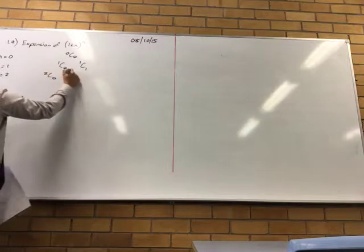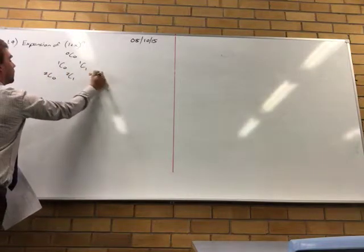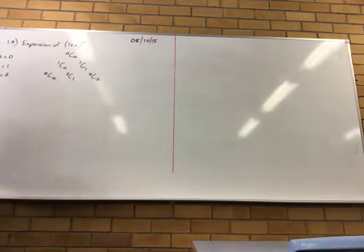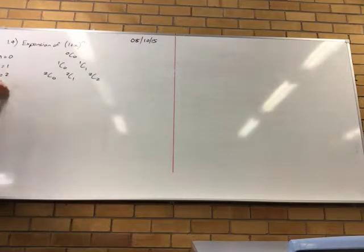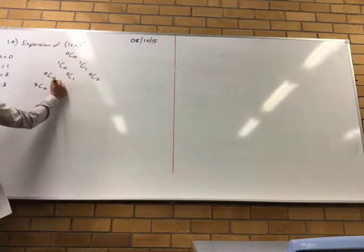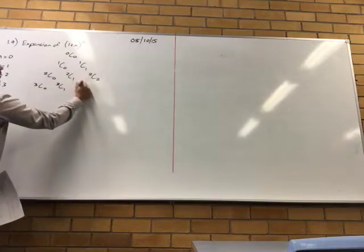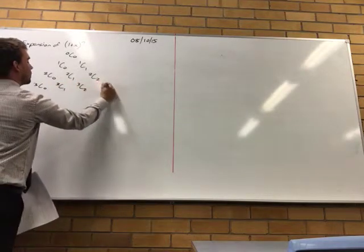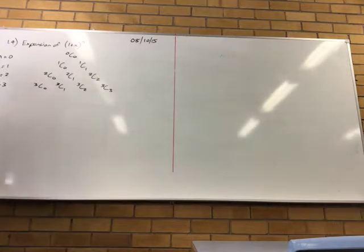So 2C0, 2C1, and 2C2. The pattern there is what numbers should we put where, which will be fairly obvious.